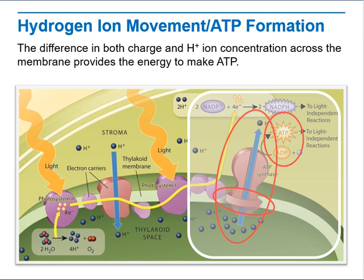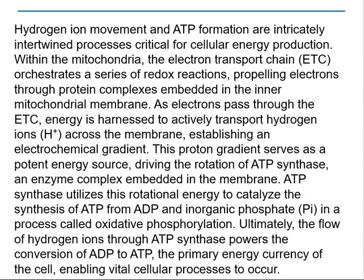Hello my dear students and welcome to this week's overview. During this week we are going to be talking about hydrogen ion movement and ATP formation. The difference in both charge and H+ ion concentration across the membrane provides the energy to make ATP. Hydrogen ion movement and ATP formation are processes that are critical for cellular energy production.